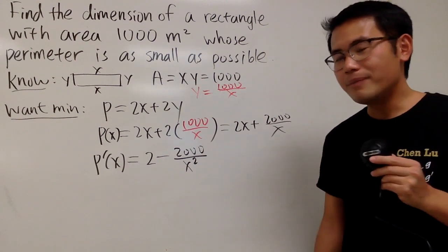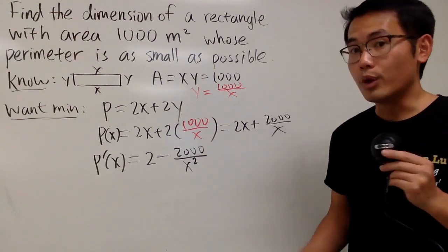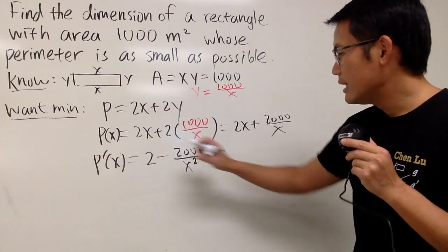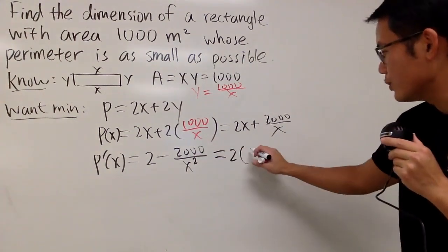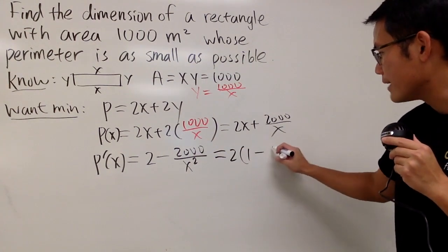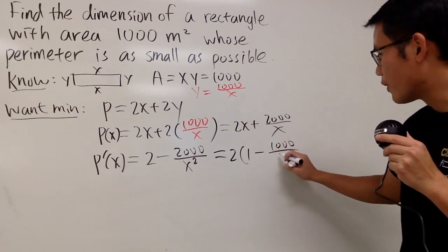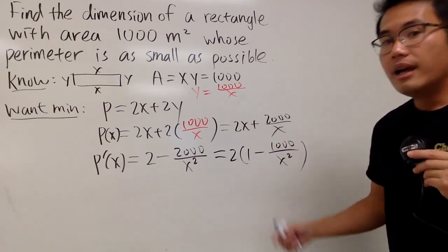To find the critical number, you can solve it for the equation now, or you can just keep factoring, up to you. I will factor it out. Let me factor out 2 first. So, I get 2 multiplied by 1 minus 1000 over x squared.